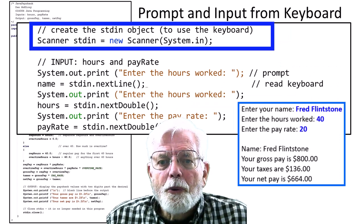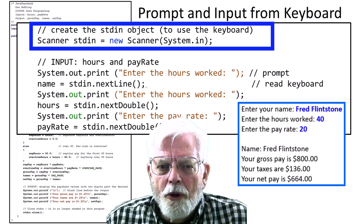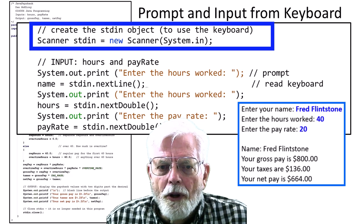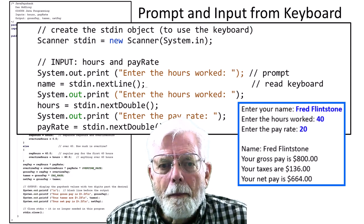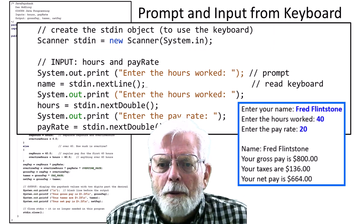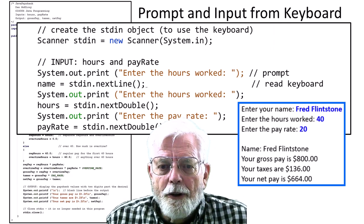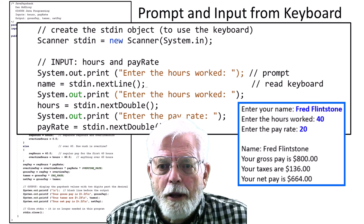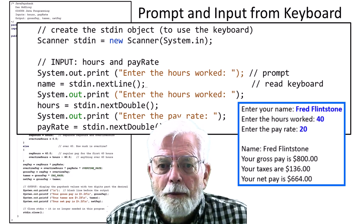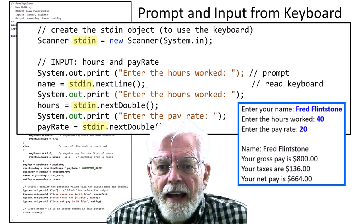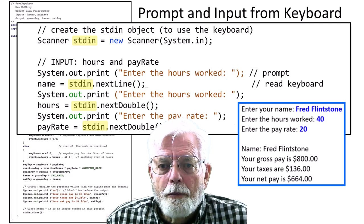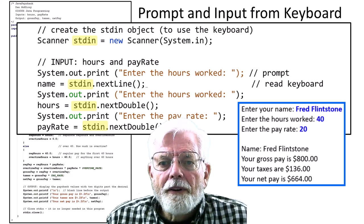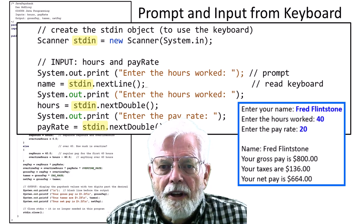It is necessary to create a scanner object in order to input data from the keyboard. You can give the scanner object any name you wish, but make it descriptive. In the past, I have used scanner input and scanner keyboard. In this example, I am using standard stdin, where stdin is short for standard input. Whatever name you use as the definition, this is the name that you need to use later in the program when reading from the keyboard.